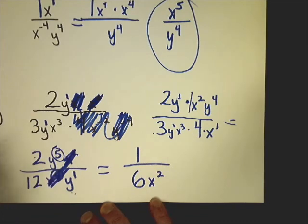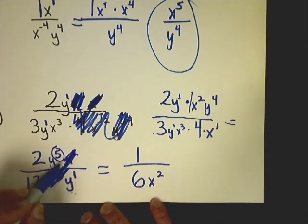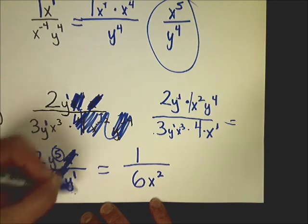In here, y to the fifth is on the top, y to the first is on the bottom. Five is bigger than one, five minus one is four.